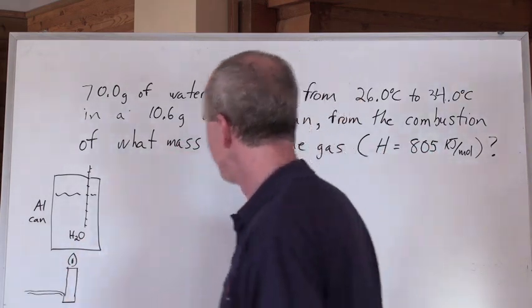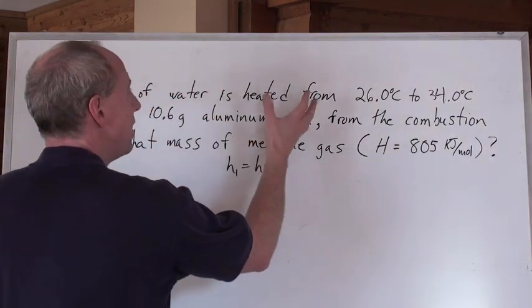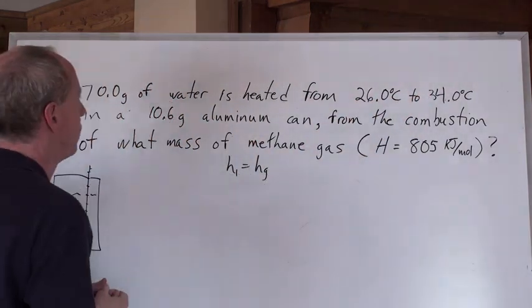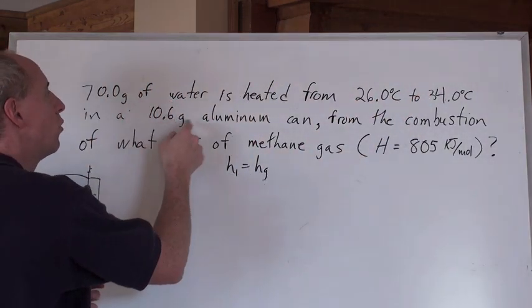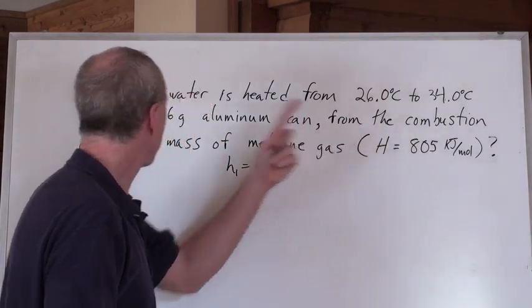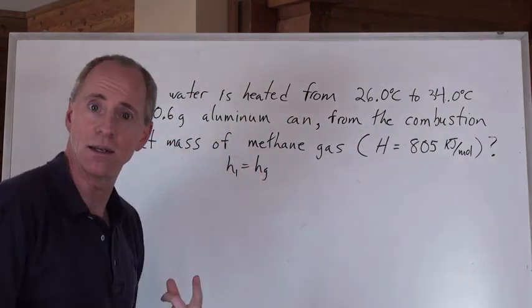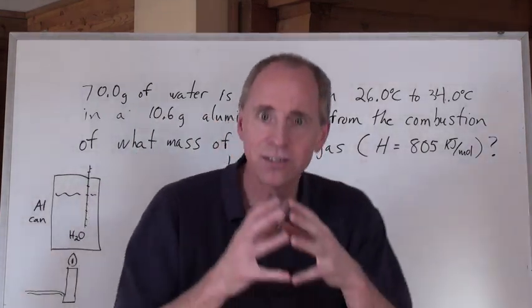So we look at this question. You got 70 grams of water and it's heated from 26 to 34 degrees Celsius in a 10.6 gram aluminum can. From the combustion of what mass of methane? Oh my goodness. So here's the thing.